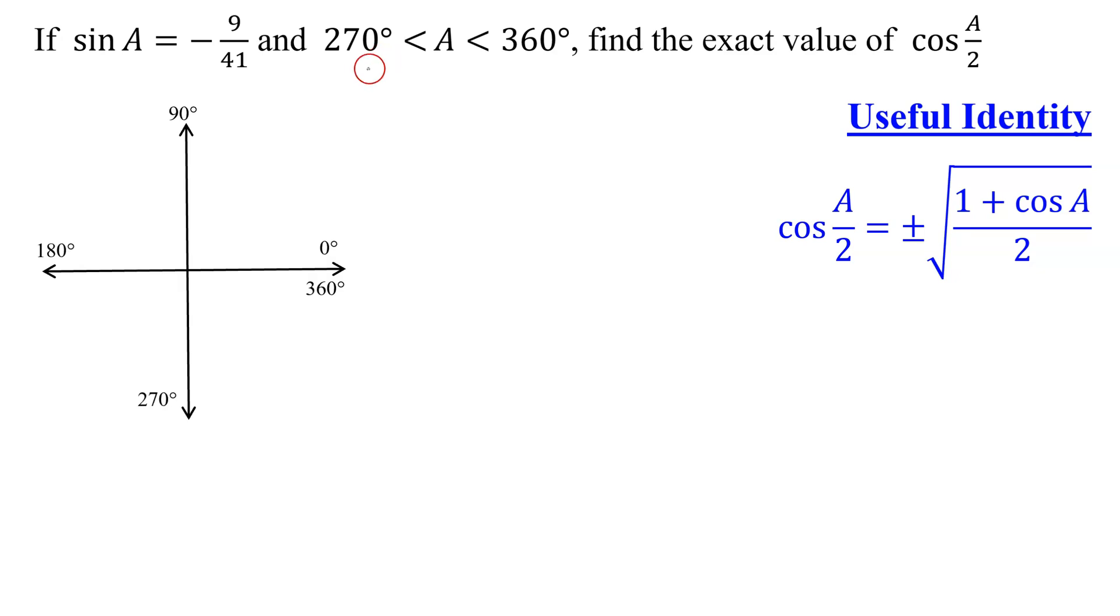Looking at my angle, angle A lies between 270 and 360 degrees. So it's somewhere in quadrant 4. I just draw my angle somewhere in quadrant 4 and then draw my little triangle. This is X, this is Y, and this is R. And my angle A rotates all the way around to quadrant 4.